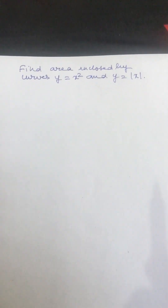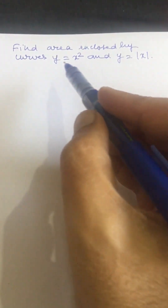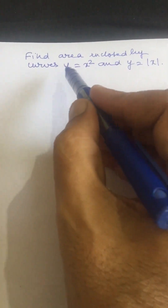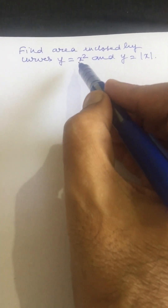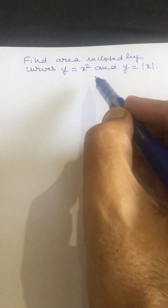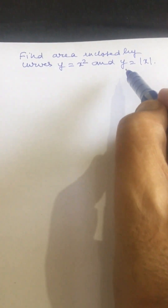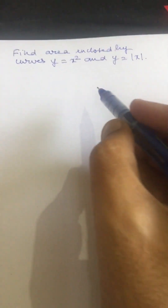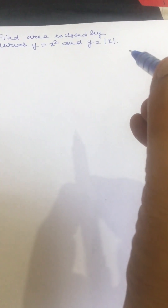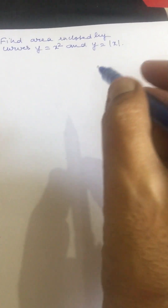Dear friends, welcome to my channel. In this video we will solve a problem like this: find the area enclosed by curves y equals x squared and y equals absolute value of x. For solving this problem we will plot these curves.